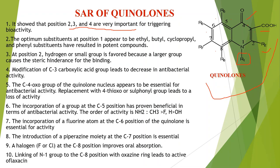Fourth point: modification of the carboxylic group at C3 (COOH). Modification of the C3 carboxylic acid group leads to a decrease in antibacterial activity. If this COOH is modified to another group, the antibacterial property decreases. The C4 oxo group and the quinolone nucleus appear to be essential for antibacterial activity.